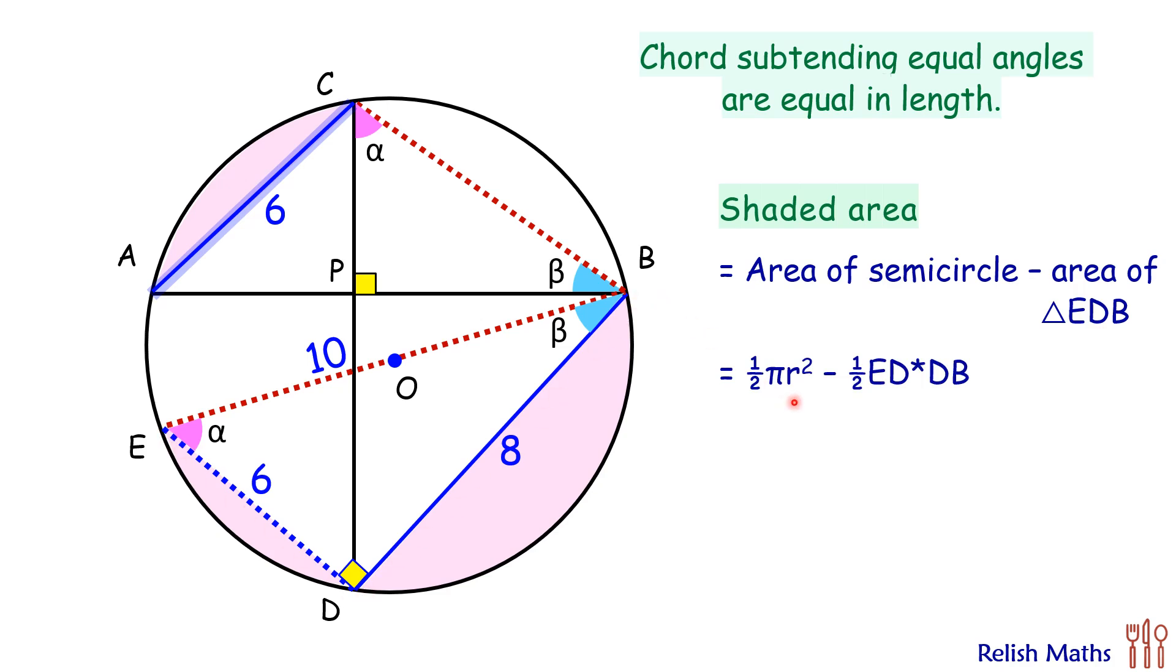Putting the values here, where r is 5 centimeters, ED is 6, and DB is 8, solving it we'll get area of the shaded region is 12.5 times pi minus 24. Simplifying, we'll get the area of the shaded region as 15.25 centimeters squared, and that's our answer.